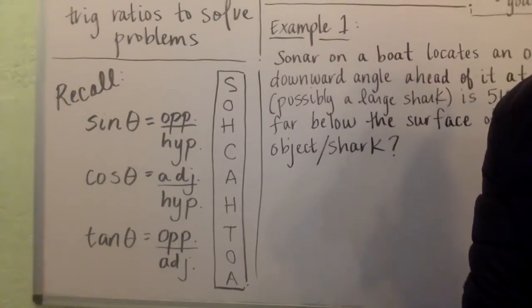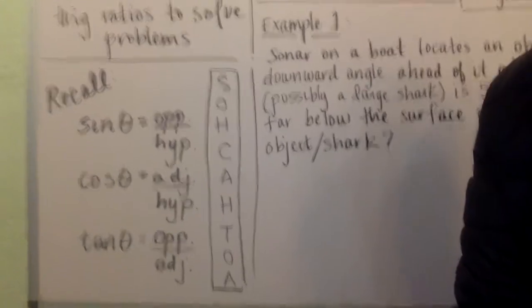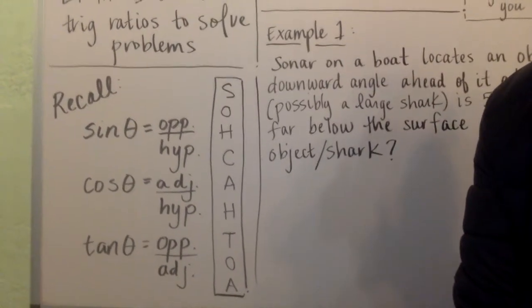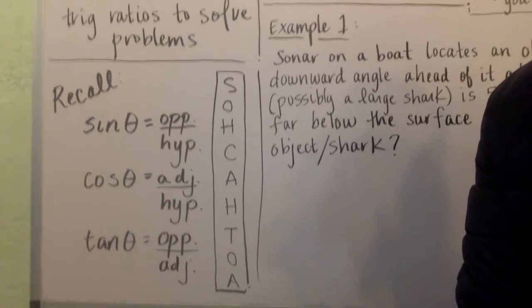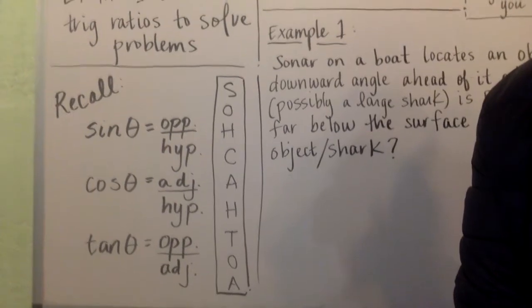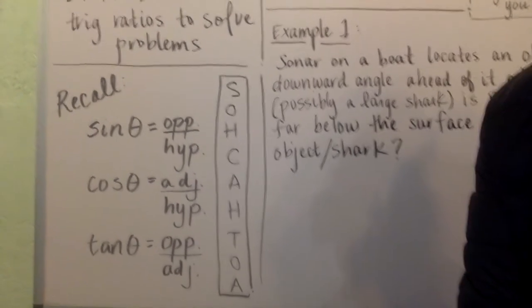So next we want to remember our trig ratios: sine is opposite over hypotenuse, cosine is adjacent over hypotenuse, tangent is opposite over adjacent. And don't forget we have our handy acronym SOHCAHTOA.